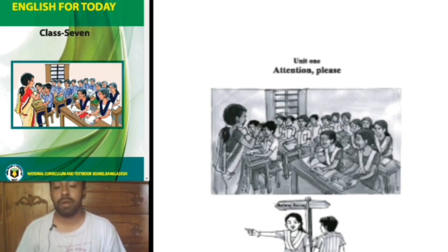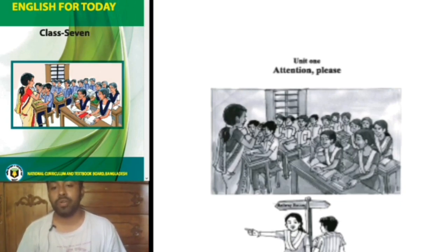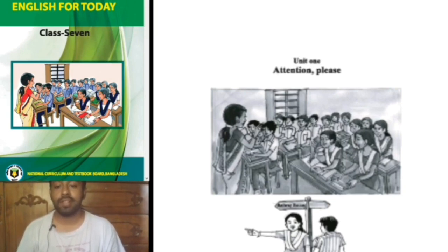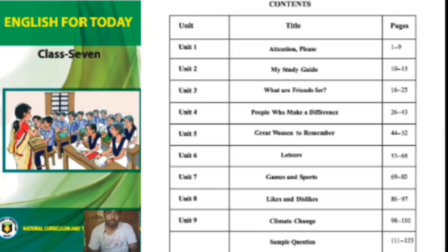I am Prankpankapurva, a resource teacher here to help with your studies. Today we are going to read English for Today, Class 7. So get ready, students of class 7. We can see that in our book there are 9 units, and the first unit is 'Attention Please'. So we start our journey from the first unit.